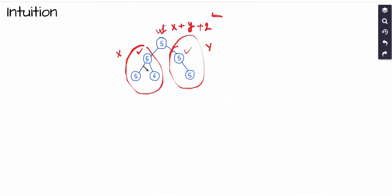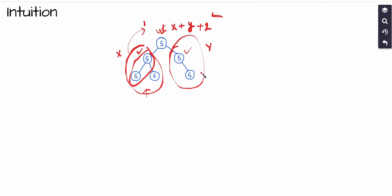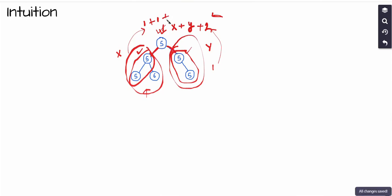For this particular example, in the left subtree the longest univalue path with value 5 is of length 1, so X equals 1. In the right subtree, the longest univalue path also has length 1, so Y equals 1. Then 1 plus 1 equals 2, and these chains are connected to the root by two edges, contributing an extra 2, giving a final length of 4. Hence 4 is the answer for the root node.